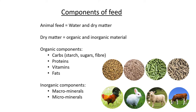This week's lesson is all about the components of feed. Animal feed equals water and dry matter. All animal feed we give our animals, whether it's lucerne or hay, contains water on the inside and everything that is dry. The dry matter itself consists of organic and inorganic material — meaning everything that contains carbon, and those things that do not contain carbon.